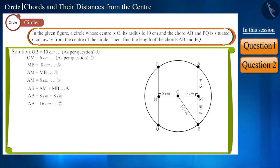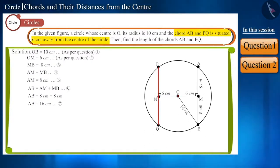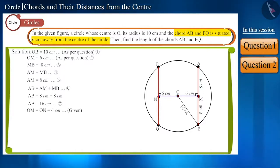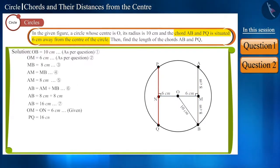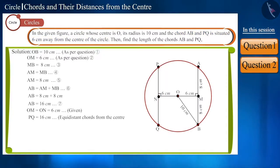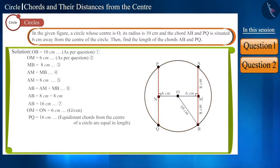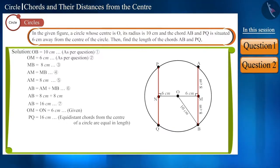Note that chord PQ is also situated at the same distance from the center as chord AB. So the two chords are at equal distances from the center. Therefore, the length of chord PQ will also be 16 cm, because we know that equidistant chords from the center of a circle are equal in length. In this way, we found the lengths of both chords AB and PQ.